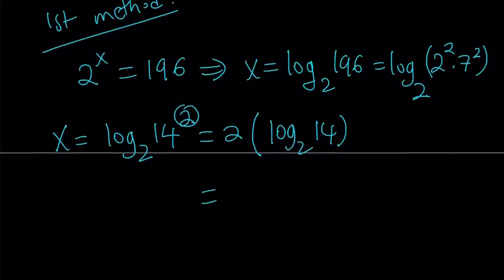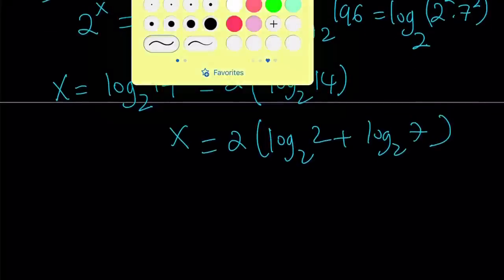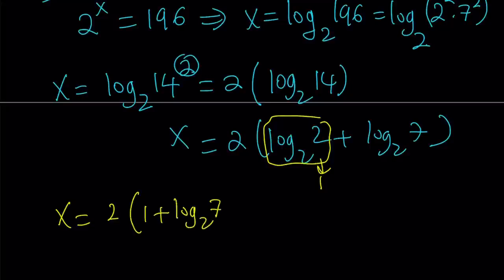Now, log 14 can be broken down into log 2 and log 7. Of course, I'm always using base 2 here, needless to say. Now log 2 in base 2 is going to be 1. Because when those numbers are equal, it's always 1. So, now from here we get something like this. x equals 2 times 1 plus log 7 in base 2. Awesome. And you can go ahead and distribute if you want, but I'm going to leave it like that for now.